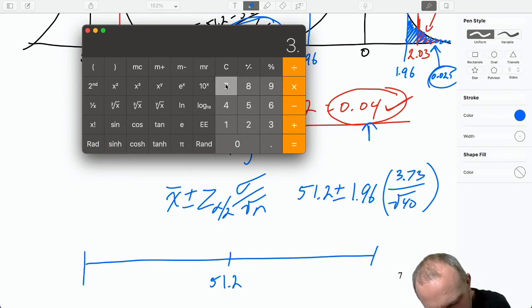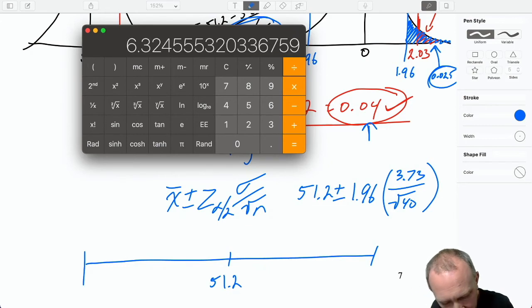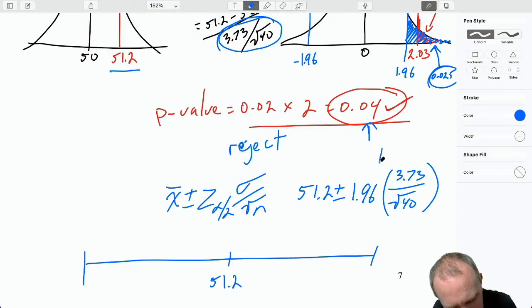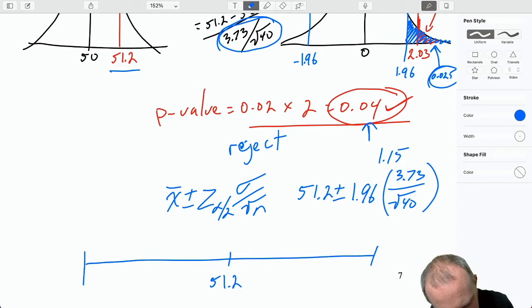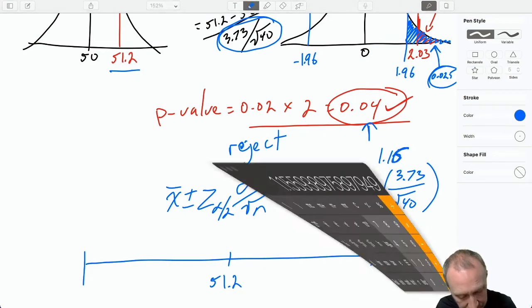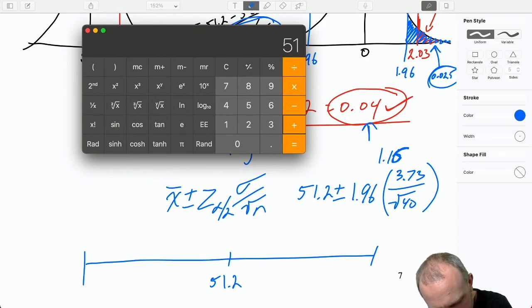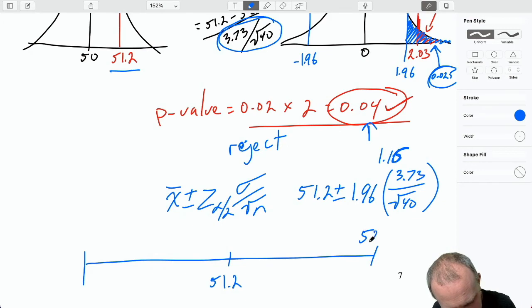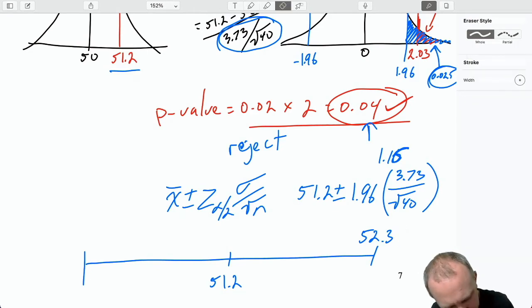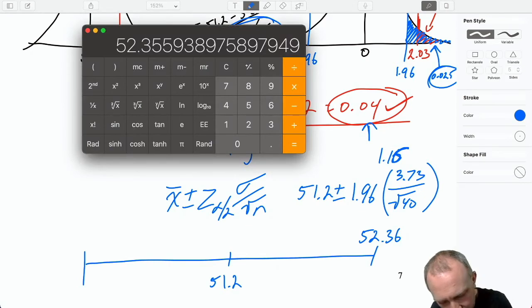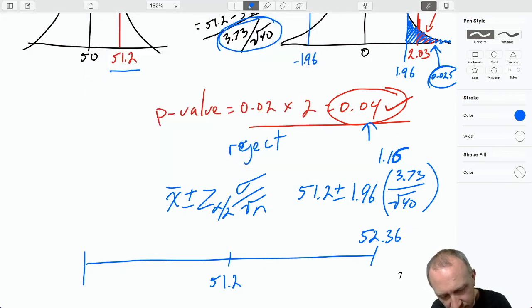I'm just going to calculate my margin of error first. I'm going to be 3.73 divided by root 40. And then I'm going to multiply that by 1.96. And so there's my margin of error. We'll round it to 1.16. Okay, so now I can get my upper limit, 51.2, and so my upper limit there is 52.36. And then my lower limit, 51.2 minus that margin of error, 50.04.